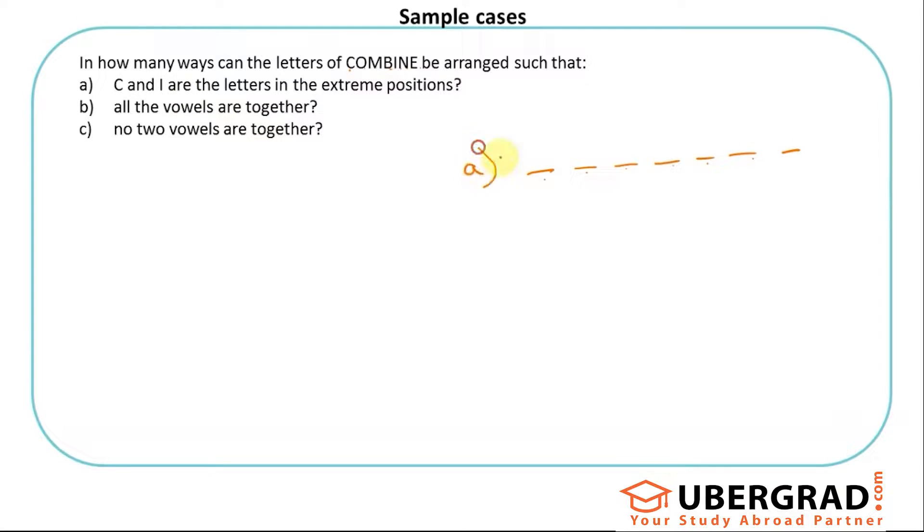The first question I am doing: C and I are the letters of the extreme positions. So I can have C here and I here, or be careful here. I can be here and C can be here. They are just saying that they are extreme positions. I don't know where C is and where I is. Do not just stick to one of these two conditions and get the half answer of it.